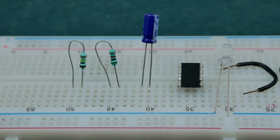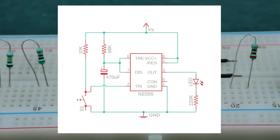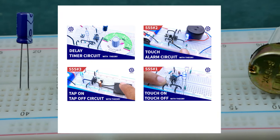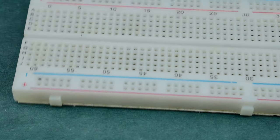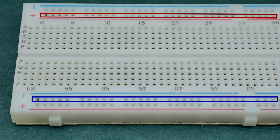For the list of components required, link to the circuit diagram, or links to all the previous and upcoming projects, please go through the description below. I'll be using this row as positive rail and this as negative rail.